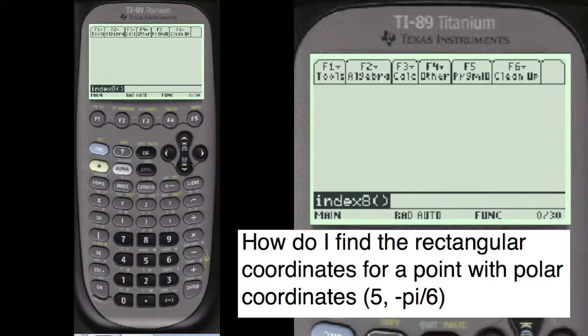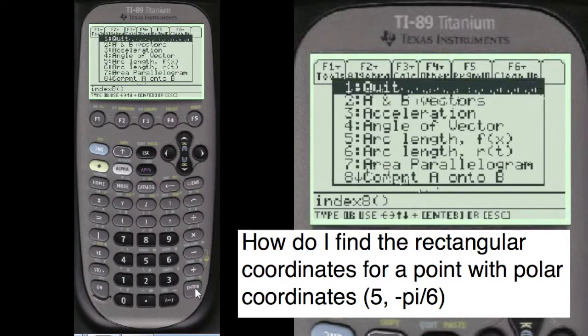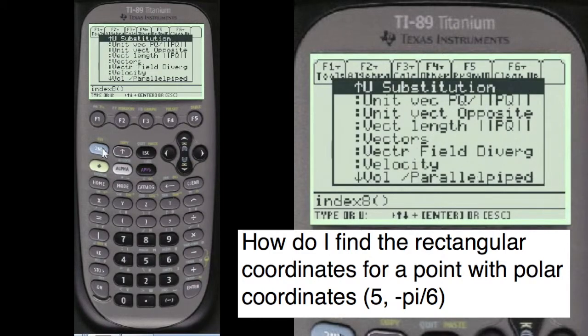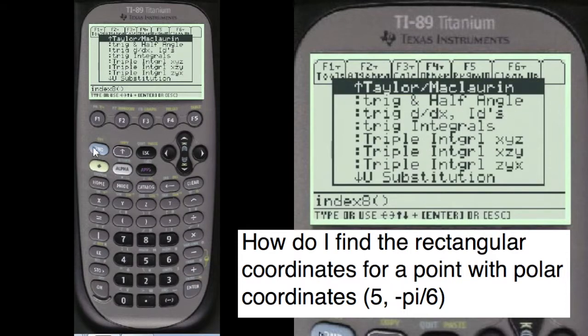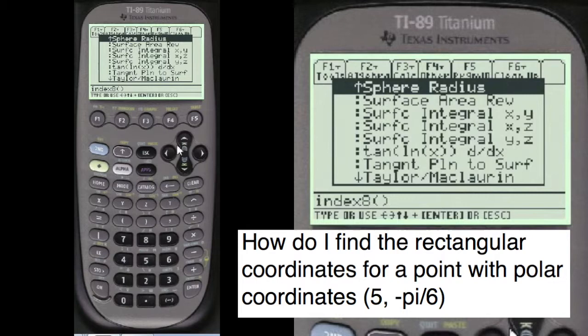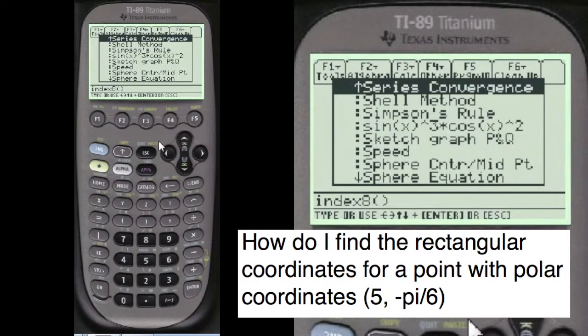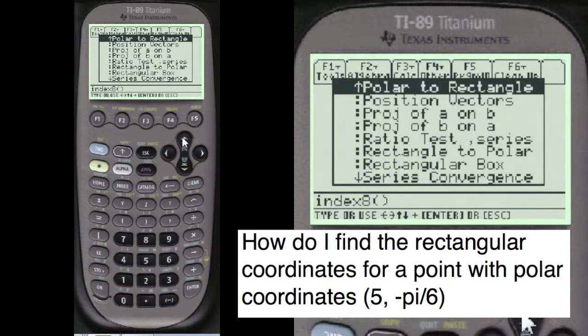So let's do it. Index 8 to get to my menu. We're going to scroll up. You can go screen by screen by pressing second. We need to get to the P's where the polar is. There's polar to rectangular.